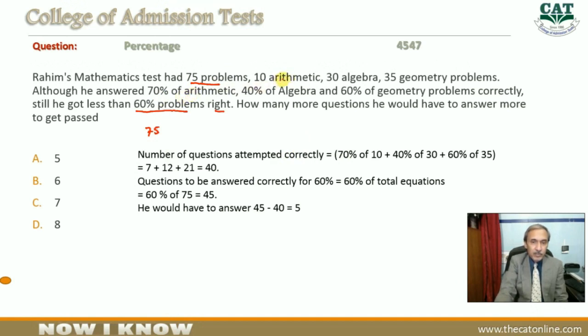So 70% of 10. Then there are 30 algebra questions, and from those 40% were correct, so 40% of 30. Geometry has 35 questions, from which 60% were correct, so 60% of 35.